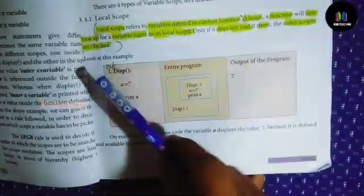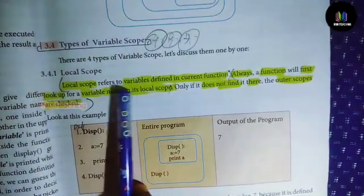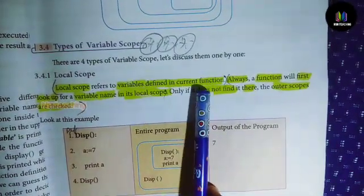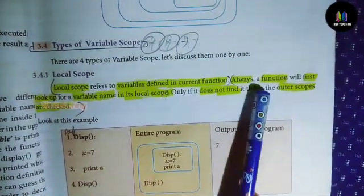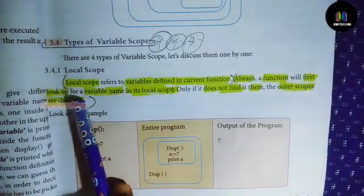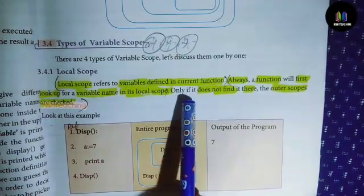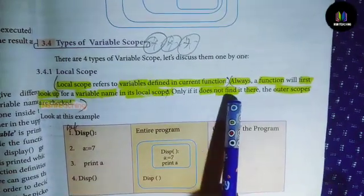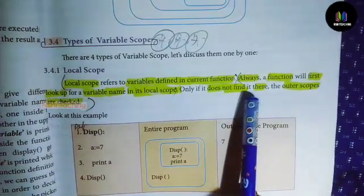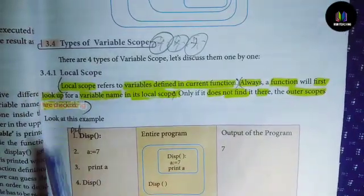Answer (page number 23): Local scope refers to variables defined in the current function. A function will always first look up a variable name in its local scope. Only if it does not find it there, the outer scopes are checked.